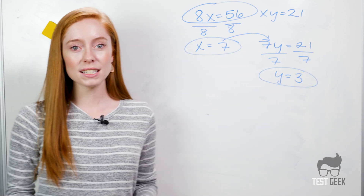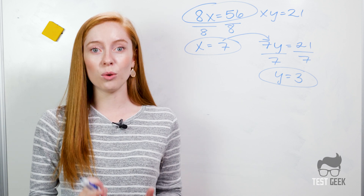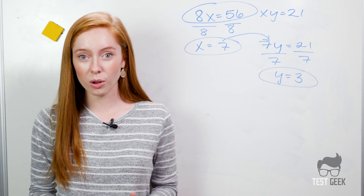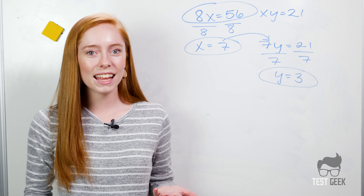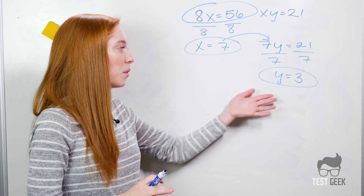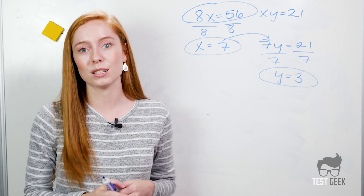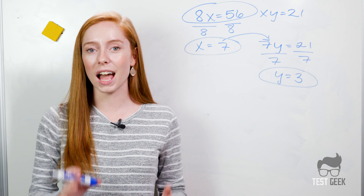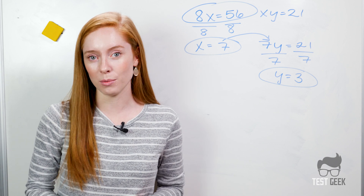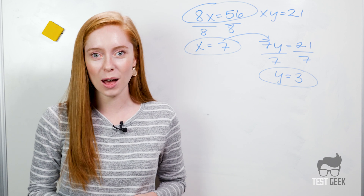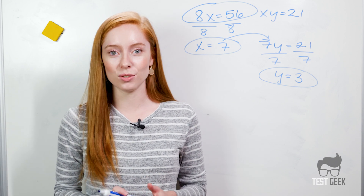On questions like this on the test, you want to make sure you know which variable or variables they're asking you about. They might sneak it in and say they're looking for y, and then you thought you got the answer because you solved for x. So make sure you're paying attention to which variable they're asking about. Let's look at another example with two variables.